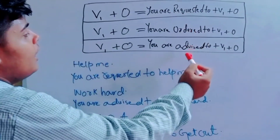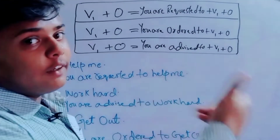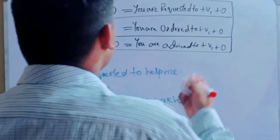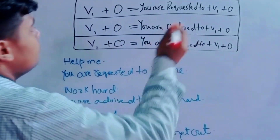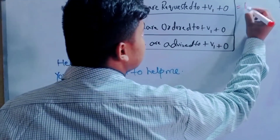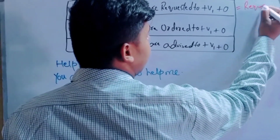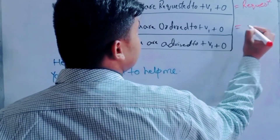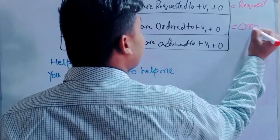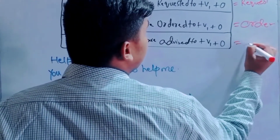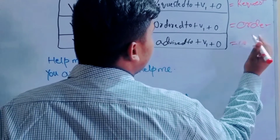Let's see: requested, ordered, and advised — how can we convert these from active to passive? This is a request sentence, this is an order sentence, and this is advice or a suggestion.